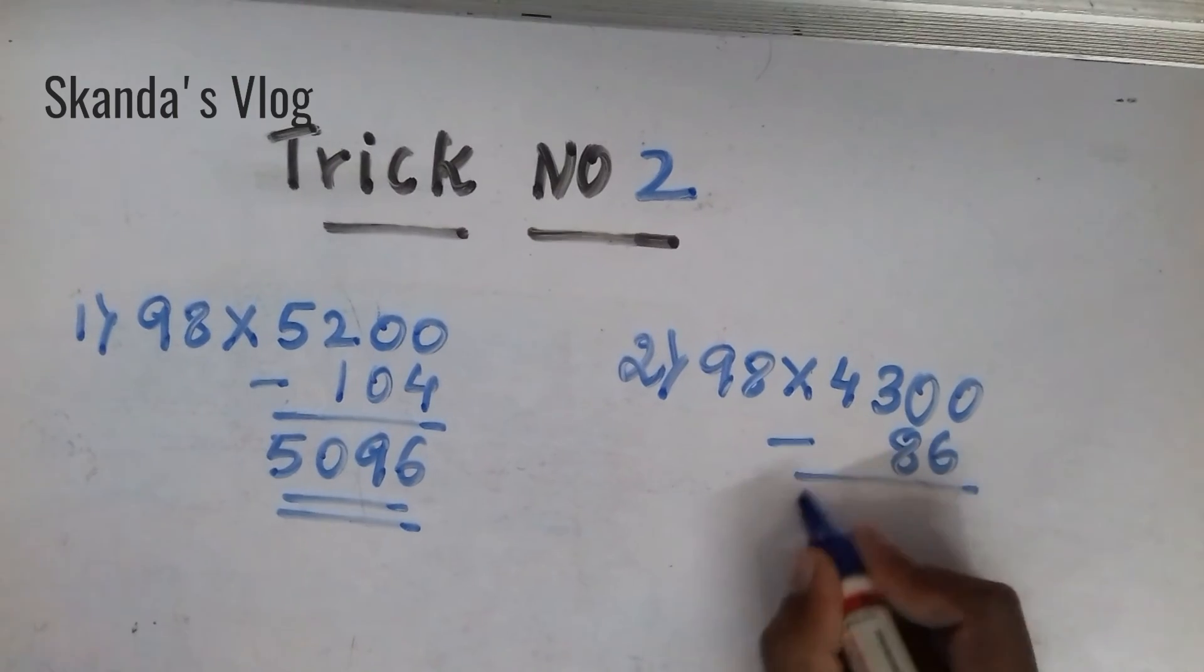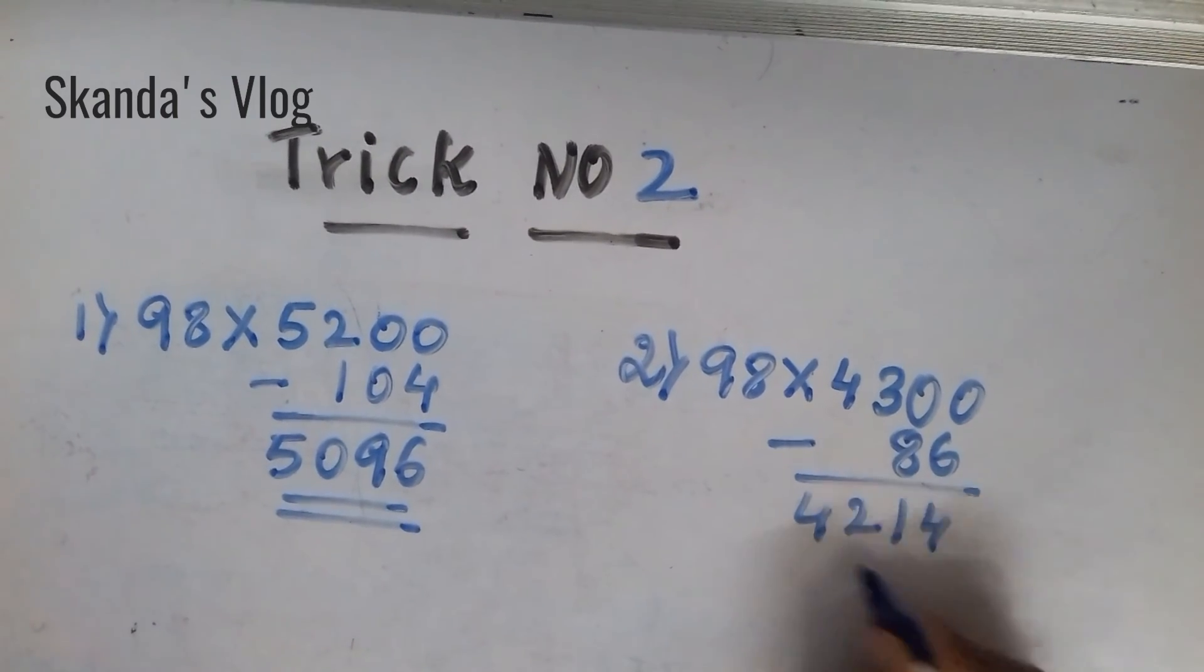43 into 2 is 86. So, minus it, you will get the answer. 4, 2, 1, 4 is your answer.